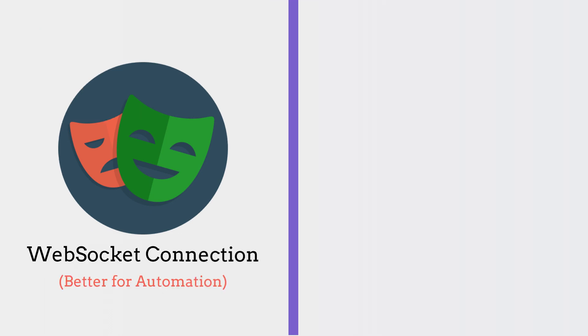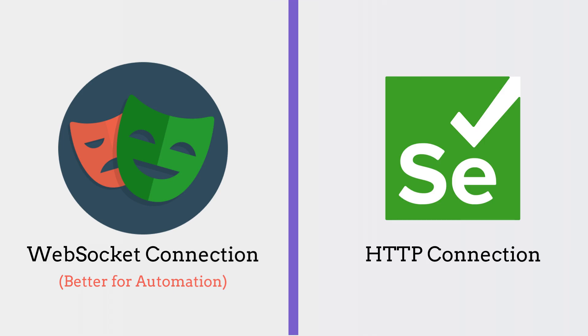Playwright communicates all requests between client and server through a single web socket connection, which is comparatively better than the Selenium HTTP connection protocol for automation.